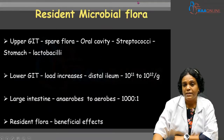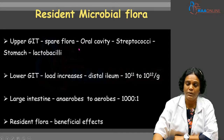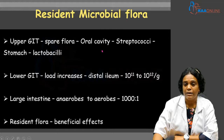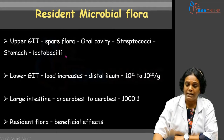Coming to the resident microbial flora — when you take the upper gastrointestinal tract, it is sparsely populated with microbial flora. If you take the oral cavity, it is populated with streptococci, whereas the stomach is populated with lactobacilli, which can resist acidic pH.